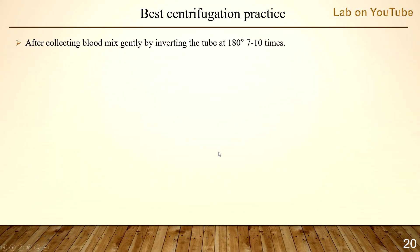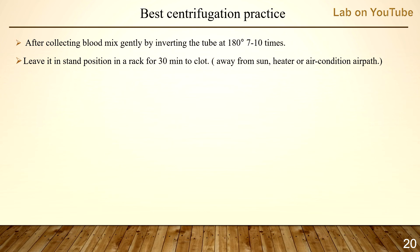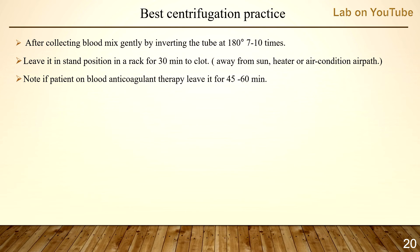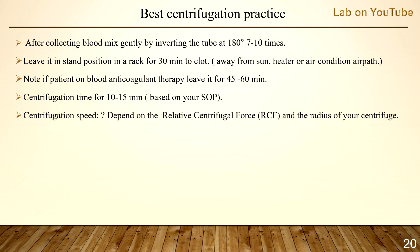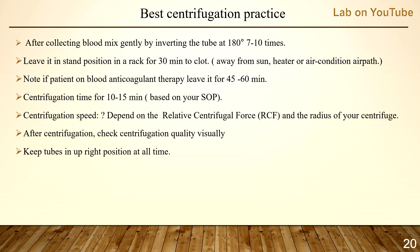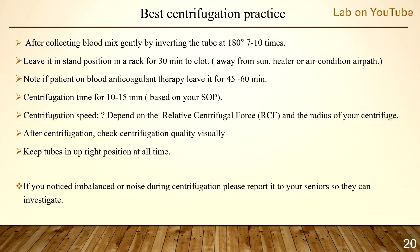Best centrifugation practices: after collecting blood, mix gently by inverting the tube 180 degrees 7 to 10 times. Leave it standing in a rack for 30 minutes to clot, away from sun, heater, or air-conditioning airflow. Note: if the patient is on anticoagulant or blood thinner therapy, leave it for 45 to 60 minutes. Centrifugation time is 10 to 15 minutes per your SOP. Speed depends on RCF and centrifuge radius. After centrifugation, check quality visually, keep tubes upright, and report any imbalance or noise to seniors.